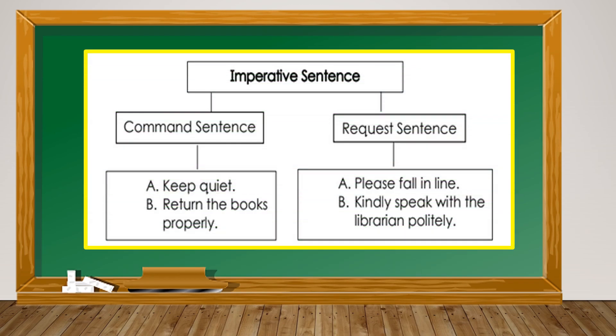We call these sentences imperative sentences. An imperative sentence ends with a period, but remember that not all sentences that end with a period are imperative — others are declarative sentences. An imperative sentence has two types: command and request. Examples of command sentences: 'Keep quiet' and 'Return the books properly.' Examples of request sentences: 'Please fall in line' and 'Kindly speak with the librarian politely.' The request sentence uses the words 'please' and 'kindly,' while the command sentence does not.